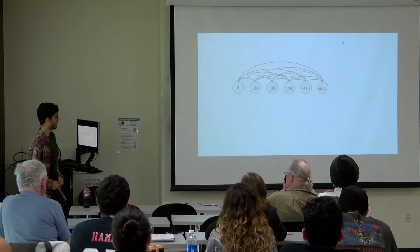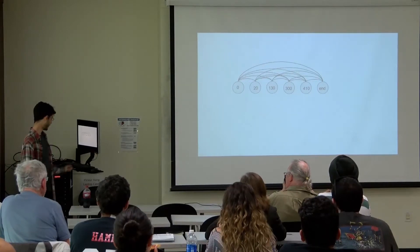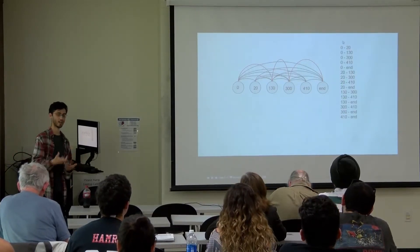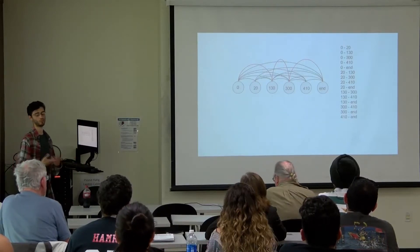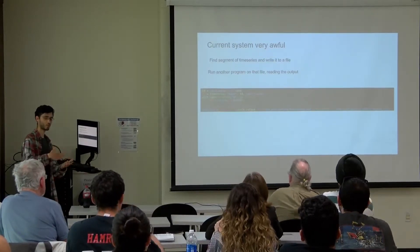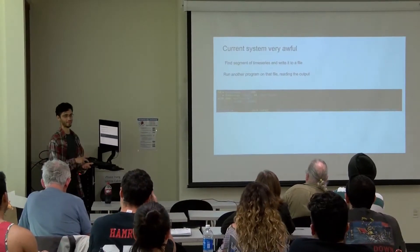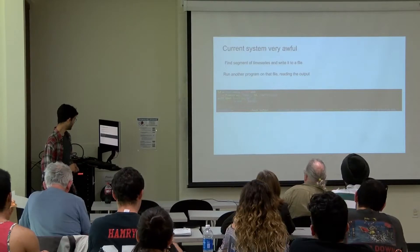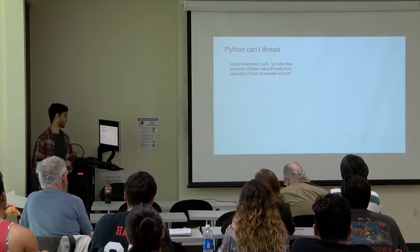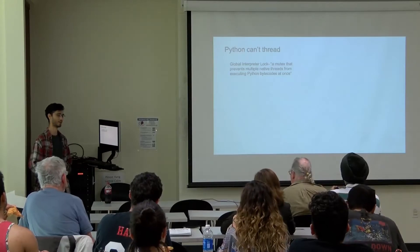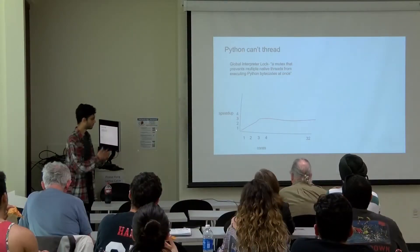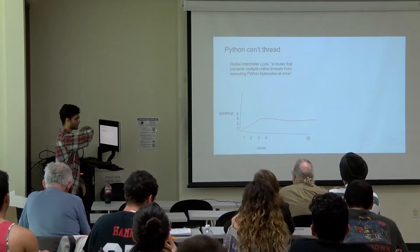There are a lot more splits, so we had to figure out which ones are correct. We made a graph where each node points to the next node, and we try to find the correct version — the red one there — which ends up being about this many intervals we have to check to predict what it is. The prior system was very awful because we would take this data, write it out to a file, run another program on it, and then read it back in. It was horribly slow. Also, Python can't actually thread — there's the global interpreter lock, which is a mutex that prevents multiple native threads from executing Python bytecode at once, so Python is effectively only single-threaded.